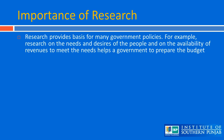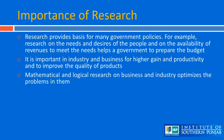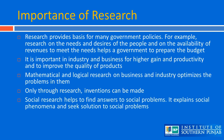It is the fountain of knowledge and provides guidelines for solving problems. Research provides the basis for many government policies. For example, research on the needs and desires of people and on the availability of revenues to meet those needs helps government to prepare the budget. It is important in industry and business for higher gain and productivity and to improve the quality of products. Mathematical and logical research on business and industry optimizes the problems in them. Only through research can inventions be made. Social research helps to find answers to social problems. It explains social phenomena and seeks solutions to social problems.